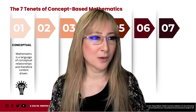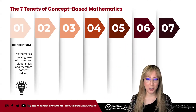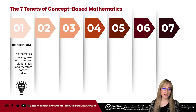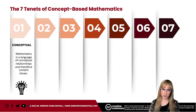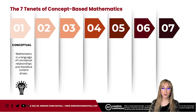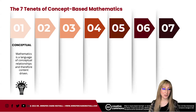The first tenet is that mathematics is a language of conceptual relationships, and therefore we are a content-driven discipline. Everything that we study in mathematics is a concept, which means it's timeless, it's abstract to varying degrees, it's universal and it's transferable. We can say that concepts are organizing ideas where examples share common attributes. If we think about mathematical concepts such as rate of change, factorization, or even the concept of area and volume, everything that we study in mathematics is a concept. So that's the first tenet — that everything in mathematics is a concept, and we are a language of conceptual relationships with a lot of concepts coming from the content of mathematics.